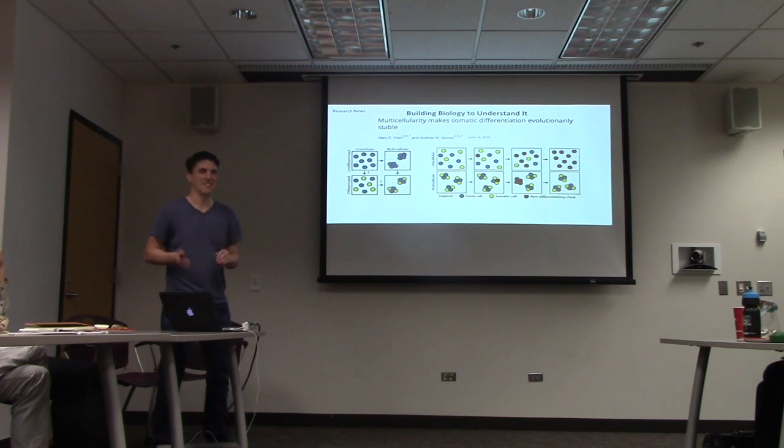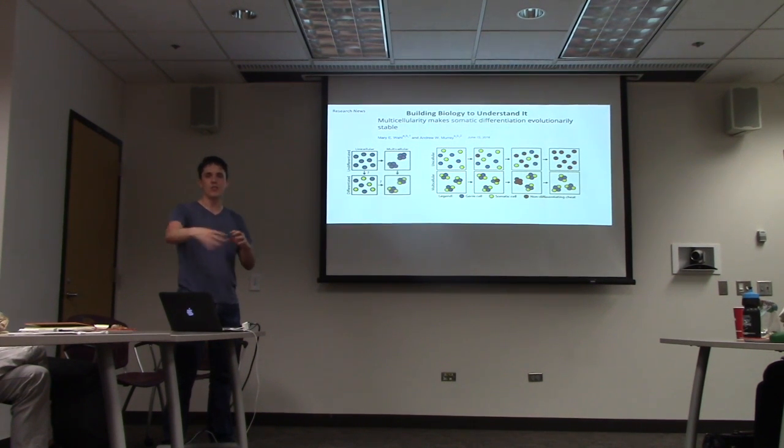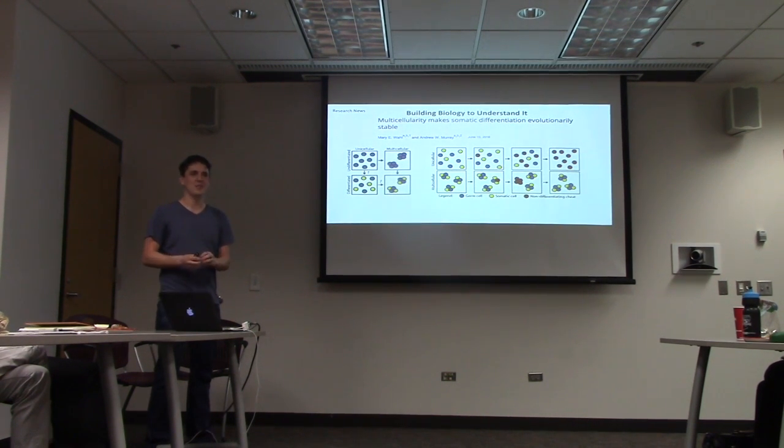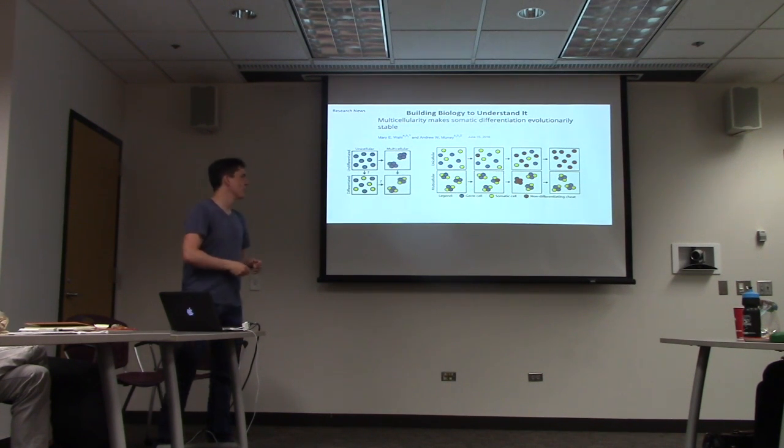And then finally, this is just the last thing. I just thought this was a cool paper about building biology to understand it. So these two researchers were trying to figure out why multicellular organisms have sort of stem cells that divide but aren't differentiated and then somatic cells that are differentiated but don't divide. And so they actually modified yeast to be a simple multicellular organism. And what they found was that basically in multicellular organisms you really want the sort of differentiated cells to not divide because if they divide then they'll start sort of propagating out of control and out-competing the somatic cells, sort of like cancer.